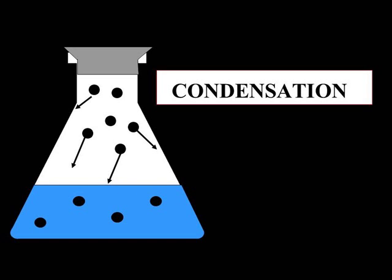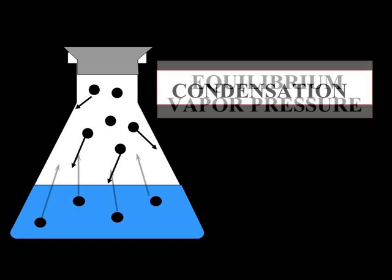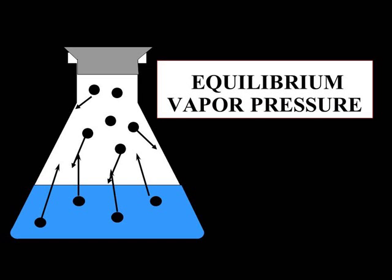Once the molecules are in the vapor state, some of them will slow down, collide, and condense back to the liquid state. You will reach, at any given temperature, an equilibrium vapor pressure for that liquid.